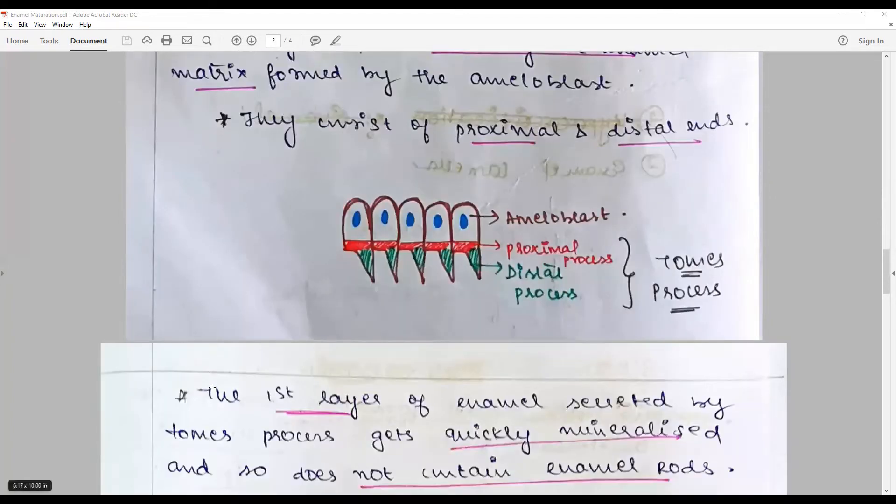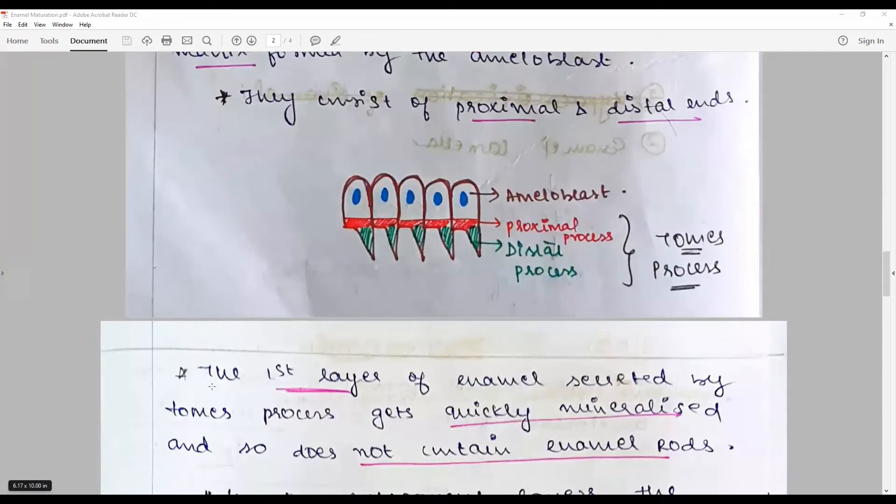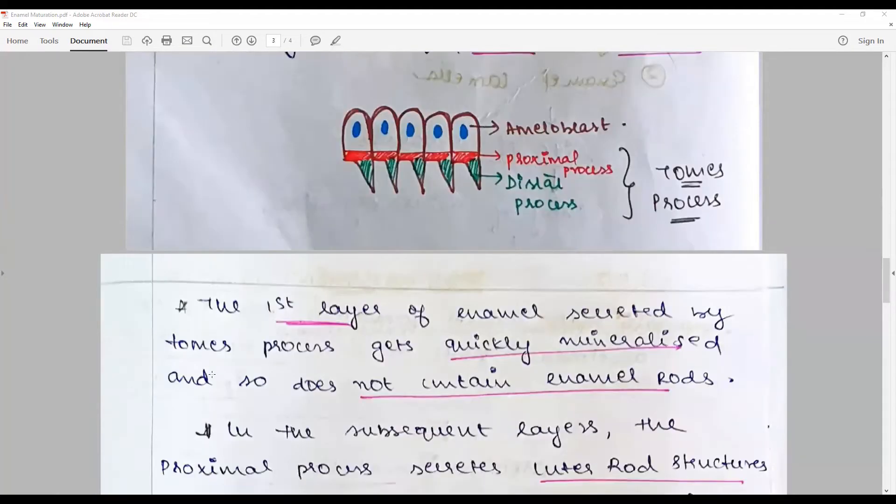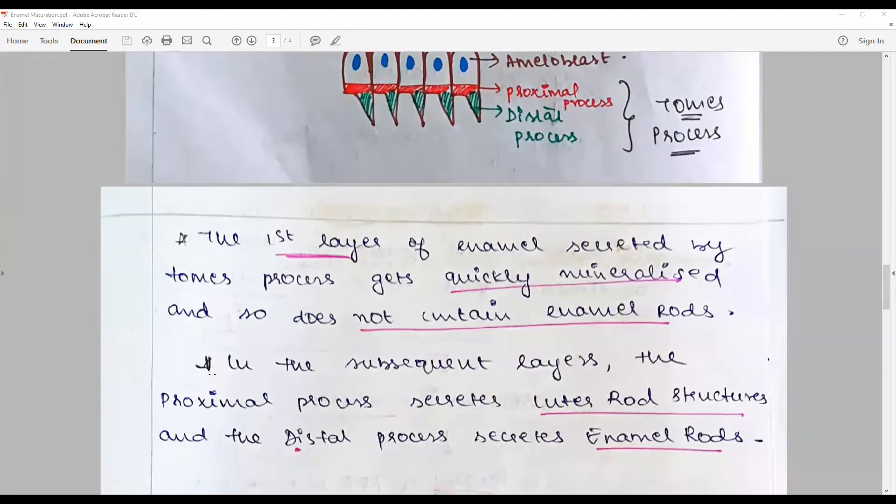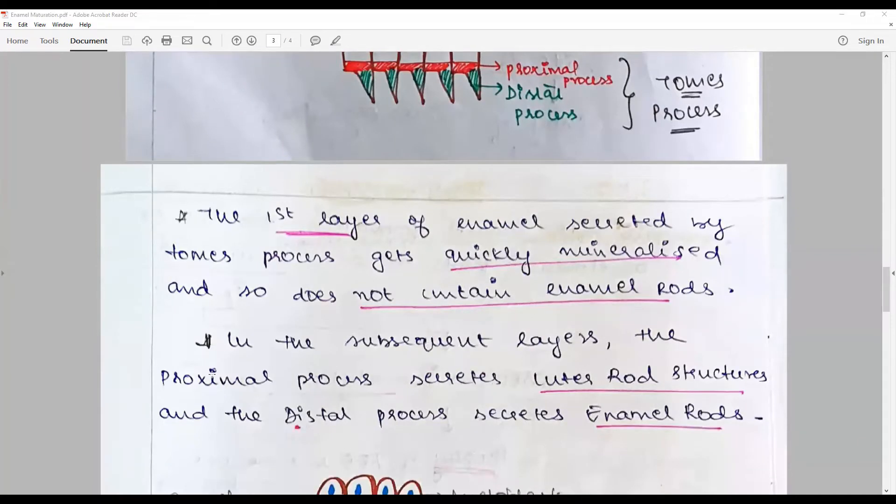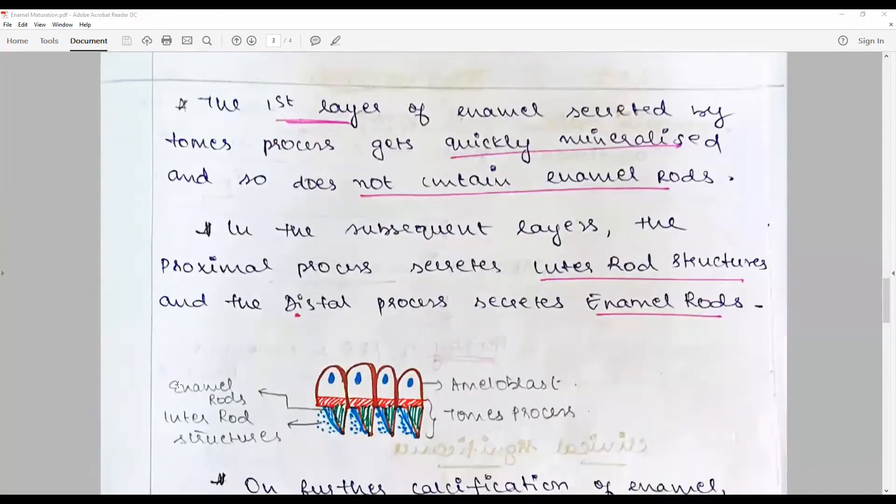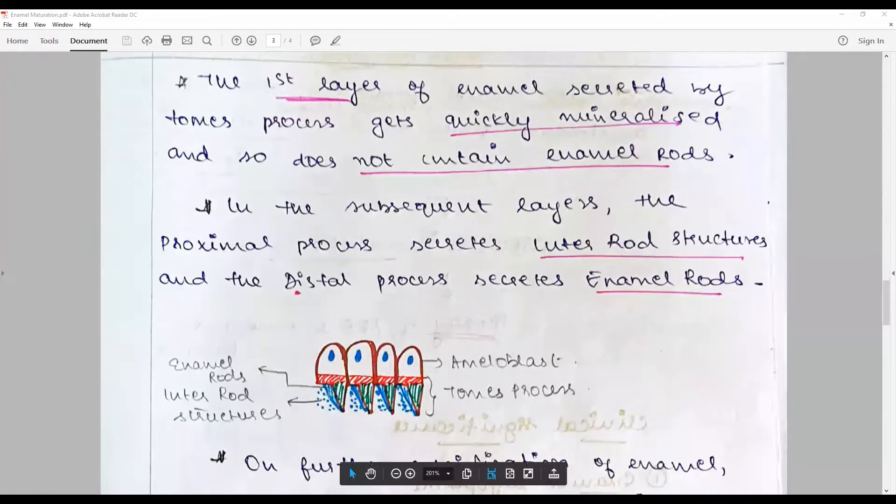The first layer of enamel secreted by the Tomes process gets quickly mineralized and so it does not contain enamel rods. This is mediated by a protein called tuftelin. In the subsequent layer, the proximal process secretes the inner rod structures and the distal process secretes the enamel rods.